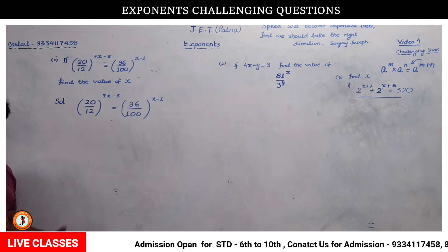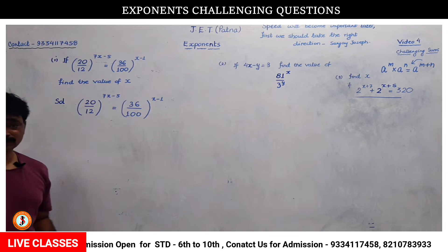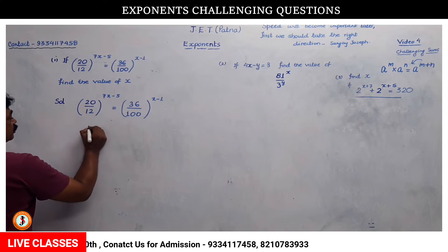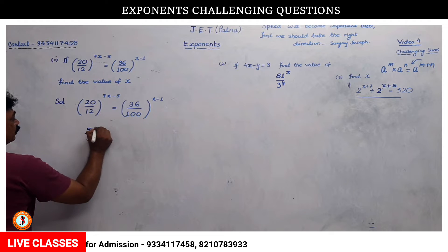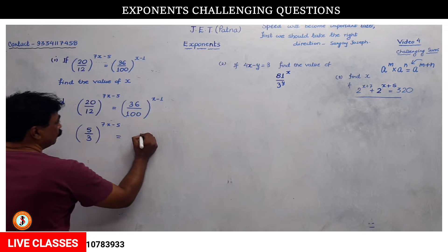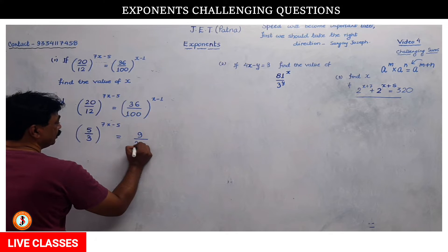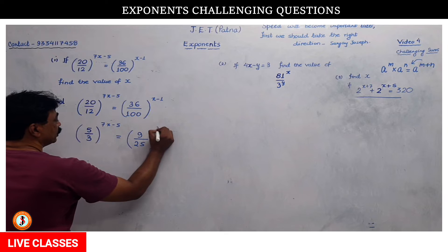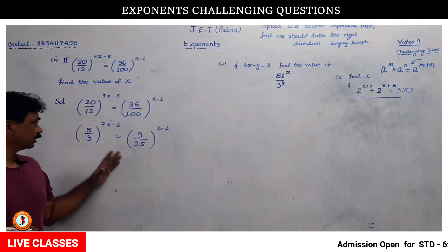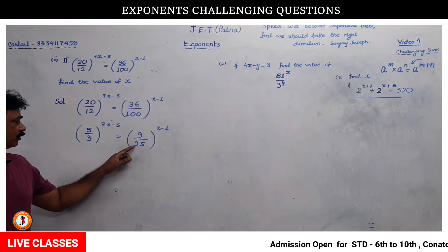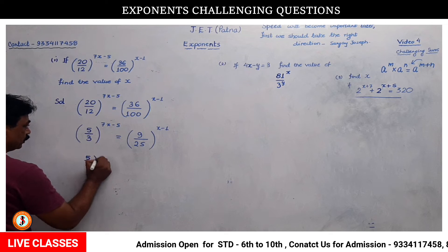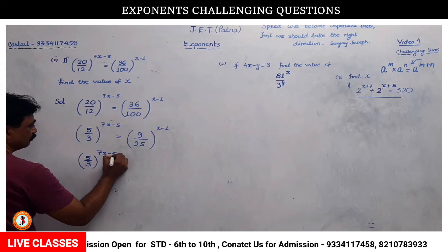The child can say that the fraction can be reduced to simplest form. So 4, 4, 4, 4, 5 is 20 and 4, 3 is 12, so this is the simplest form. The simplest form of the fraction is (5/3)^(7x-5) equals (3/5)^(2(x-1)). This is 5 by 3 to the power 7x minus 5 equals 3 squared by 5 squared to the power x minus 1.